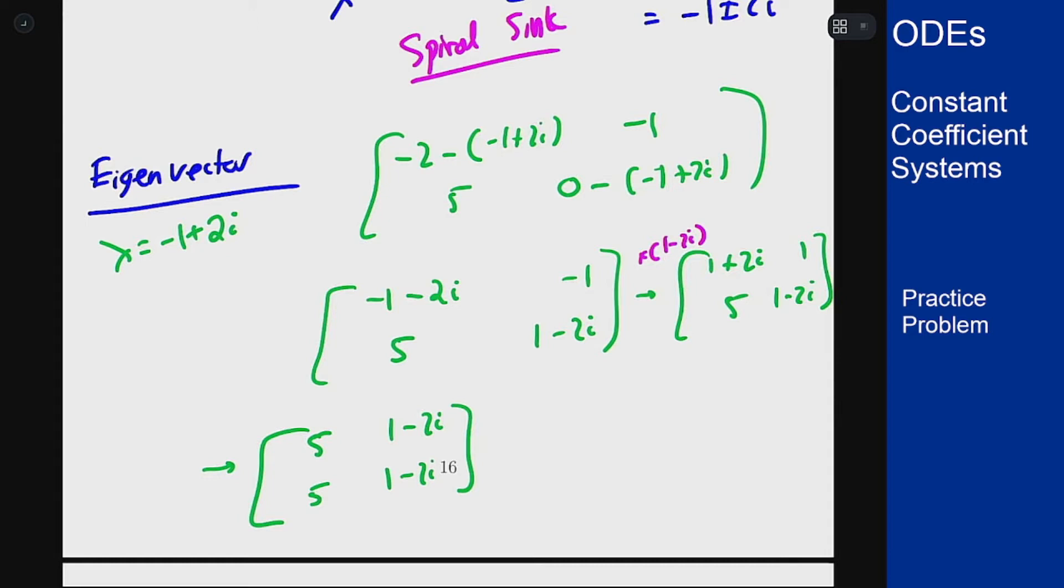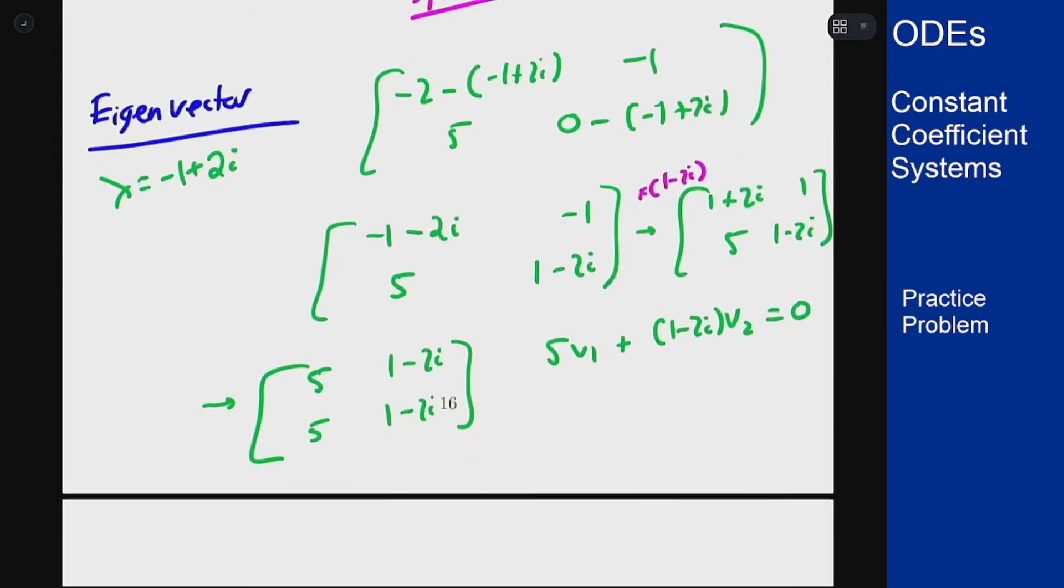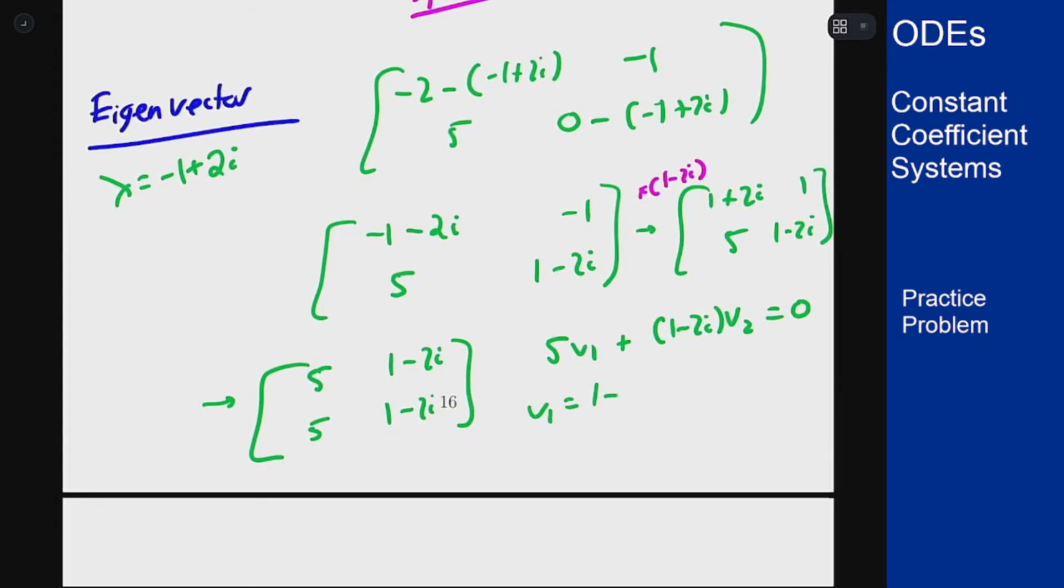And so result in the equation five v one plus one minus two i v two equals zero. The easiest way to probably solve this is to pick v one to be one minus two i and v two to be minus five and that will solve this equation. I basically just cross them up pick values here appropriately. So the vector we get is one minus two i and minus five.